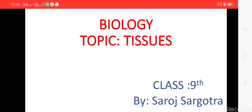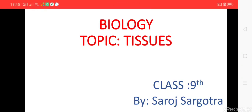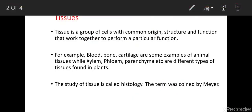In a similar manner, in plants, cells of the phloem conduct food from leaves to other parts of the body. This specialization is achieved only due to differentiation, as cells occupy different shapes, sizes, and functions. So, tissue is a group of cells with a common origin, structure, and function that work together to perform a particular function. For example, blood, bone, and cartilage are animal tissues, while xylem, phloem, and parenchyma are plant tissues. The study of tissues is called histology.